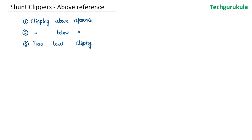We'll just see briefly what is meant by all three. In this video, we're going to discuss only about the above-reference shunt clippers. Taking an input waveform as a reference for all three operations — clipping above reference, clipping below reference, and two-level clipping.